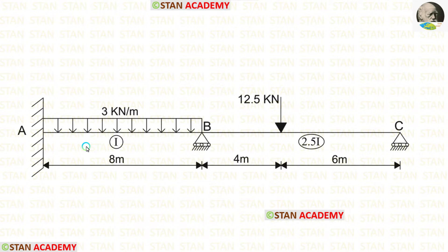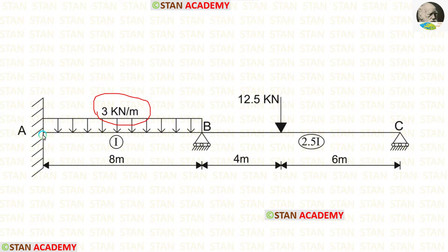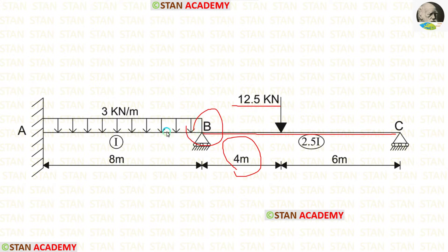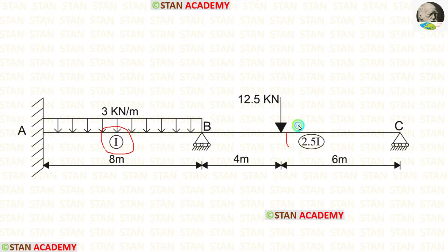In this beam, there are two spans: span AB and span BC. In span AB, there is a uniformly distributed load of 3 kN/m acting for the full span. In span BC, we have an eccentric point load of 12.5 kN acting at 4 m from point B. The moment of inertia for span AB is I, and for span BC it is 2.5I. The length of span AB is 8 m and the length of span BC is 10 m.